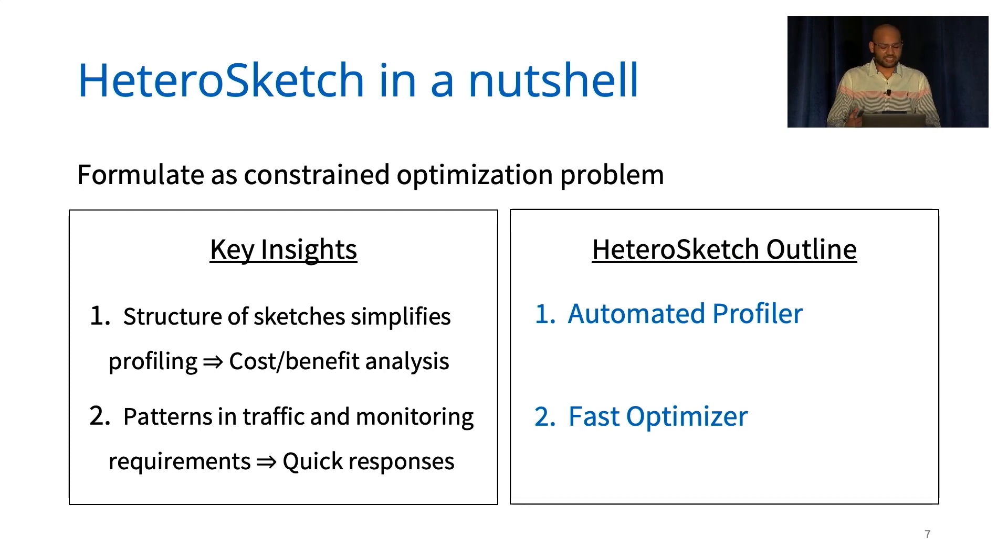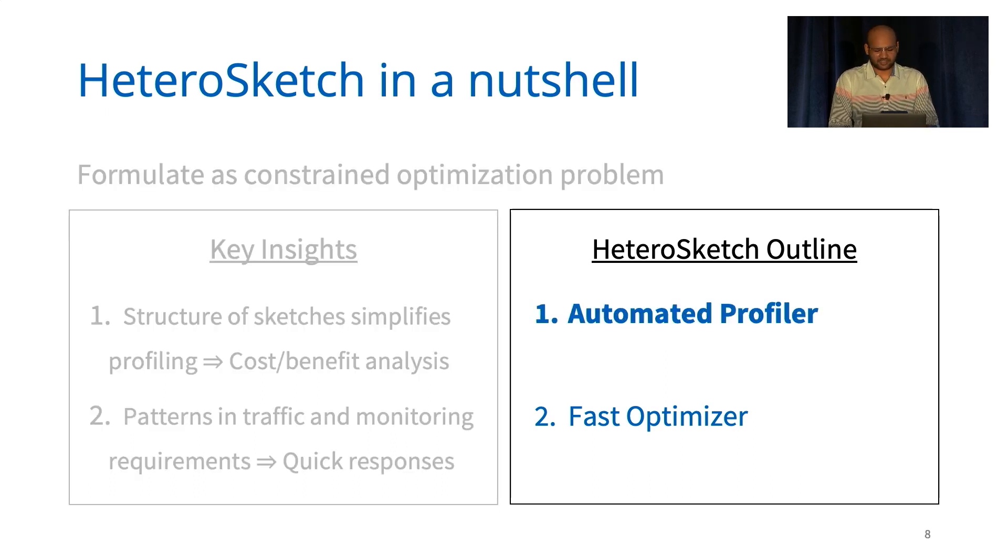It consists of two key components. First is an automated profiler that studies the performance resource trade-offs of different devices, and the performance resource trade-offs can then be used by the optimizer to intelligently place sketches and allocate resources. In what follows, I'll describe both of these components in a bit more detail, followed by their evaluation. So let's start with the profiler.